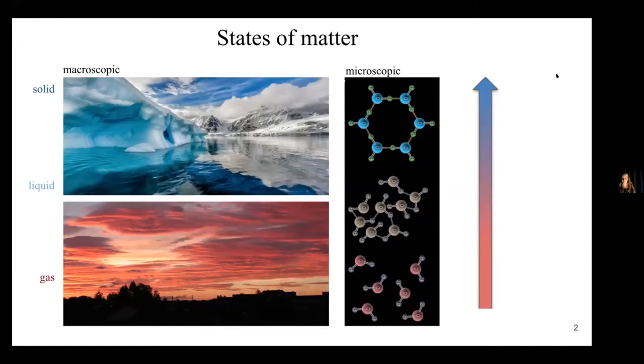In states of matter, you have microscopic interactions that change. Differences in the coupling, the interactions, lead to an emergence of differences in the macroscopic behavior of matter. So, if you have increased interactions, you're more likely to get ice, water, whereas a higher entropy state of the microscopic system will lead to gas.